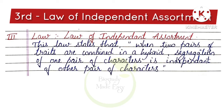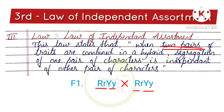When two pairs of traits are combined in a hybrid, the F1 generation has plants that differ in two characters. In the hybrid there is a heterozygous condition. One character has heterozygous alleles and another character also has heterozygous alleles.